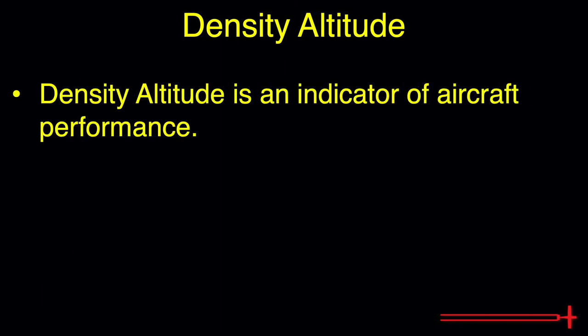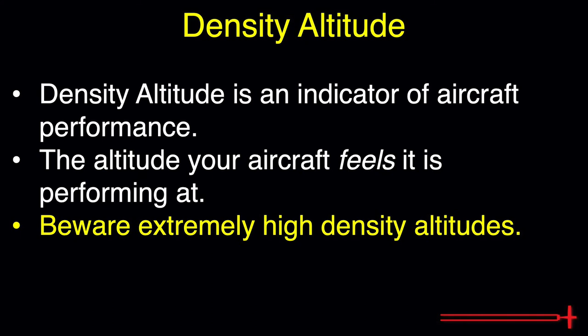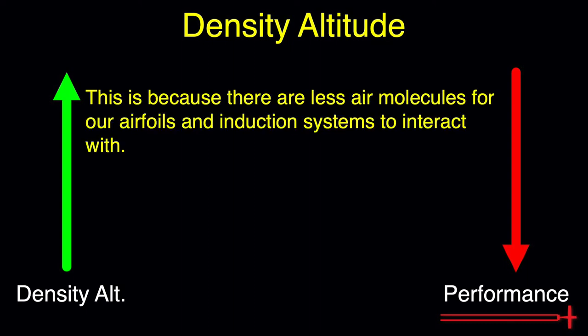Density altitude is an important indicator of aircraft performance. Think of density altitude as the altitude that your aircraft thinks it is performing at. If density altitude is 5,000, then your aircraft will perform as though it's at 5,000 feet MSL. If it's 9,000, it'll feel like it's performing up there. Watch out when operating at extremely high density altitudes. As a general rule, any increase in density altitude comes with a decrease in normally aspirated aircraft performance, because at a higher density altitude there are proportionately fewer air molecules for our airfoils and induction systems to interact with.